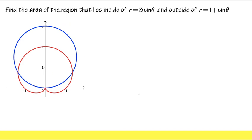We're going to find the area that lies inside of r = 3sin(θ) but outside of r = 1 + sin(θ). Which one is which? Well, the blue one is 3sin(θ). Why? Because...